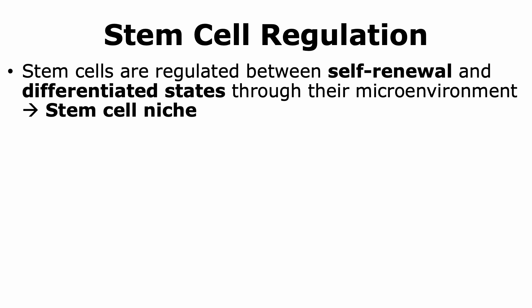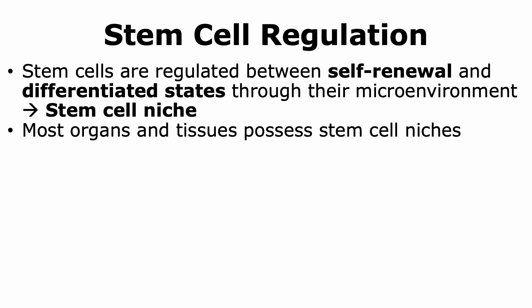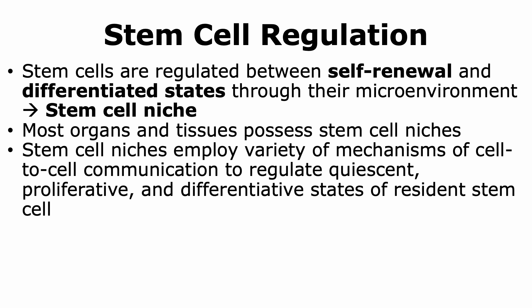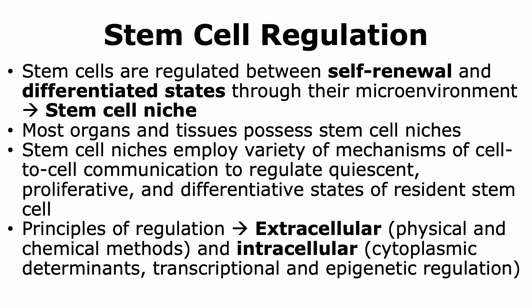Stem cells are regulated between cell renewal and differentiated states. When a stem cell undergoes cell division, whether it remains as a stem cell or differentiates into a different committed cell depends on the microenvironment it's in, which is called the stem cell niche. Most organs and tissues possess stem cell niches. The stem cell niches employ a variety of mechanisms of cell-to-cell communication to regulate the quiescent, proliferative, and differentiated states of the resident stem cells. The principles of regulation involve both extracellular mechanisms — including physical and chemical methods — as well as intracellular mechanisms that include cytoplasmic determinants, transcriptional, and epigenetic regulation.